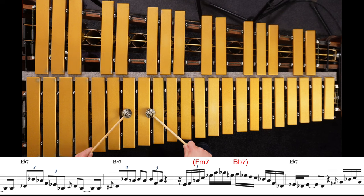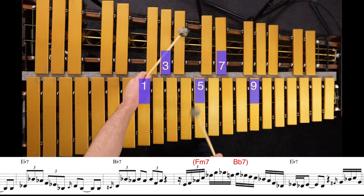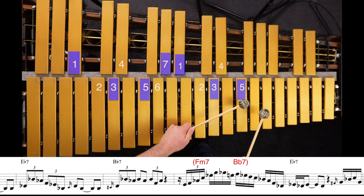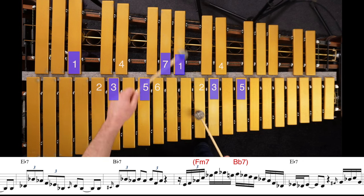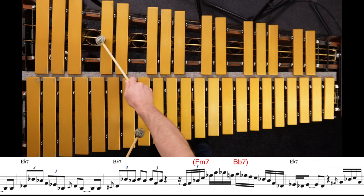So that phrase is an Fm9 chord with a chromatic approach to the root: chromatic approach, one, three, five, seven, nine, then a chromatic enclosure which is now five, four, three, two, one, seven, five on the Bb7.